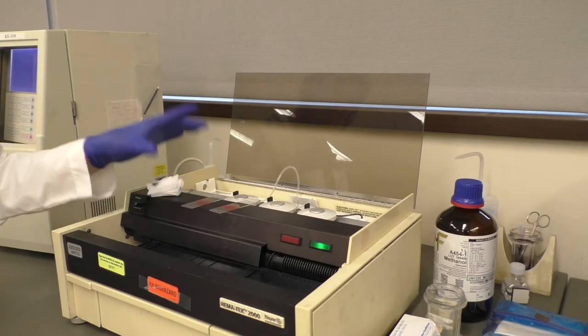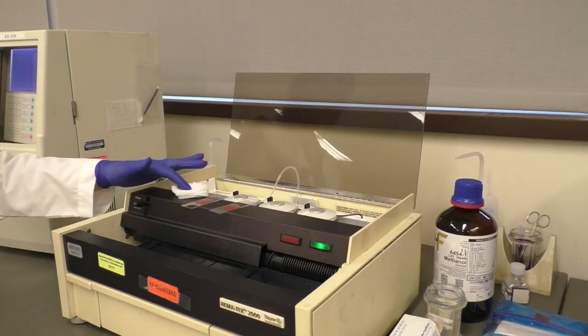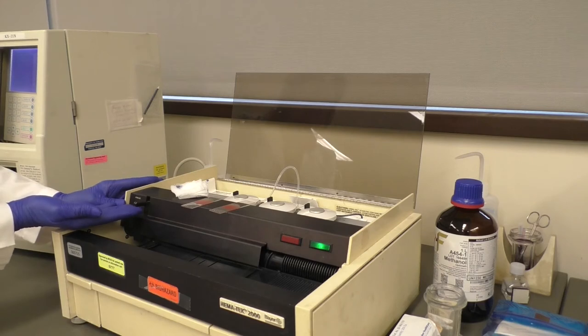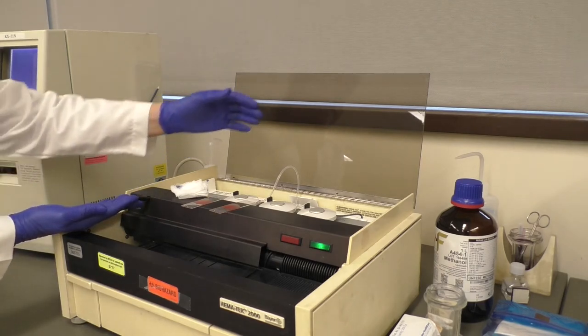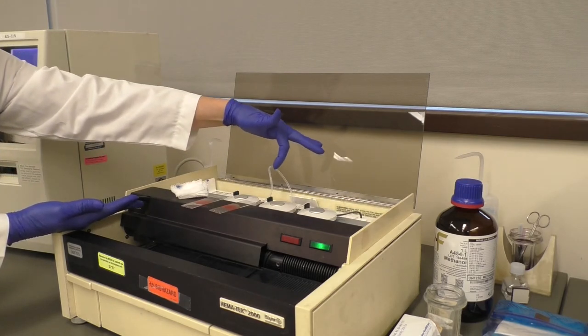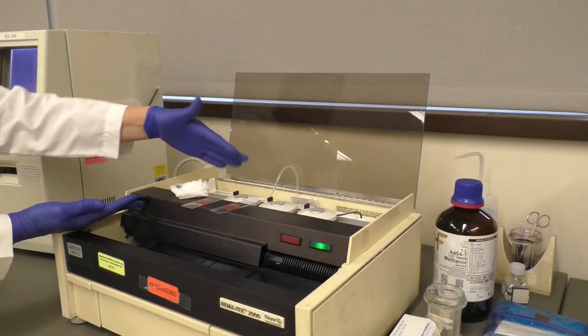The first portion of this procedure is priming. First, lift and hold the operating lever to the top position to prime. Hold in this position until the stain, buffer, and rinse solutions flow evenly through their tubes without any air bubbles.